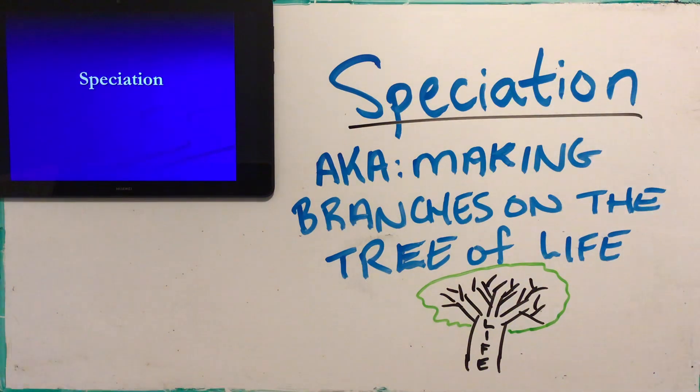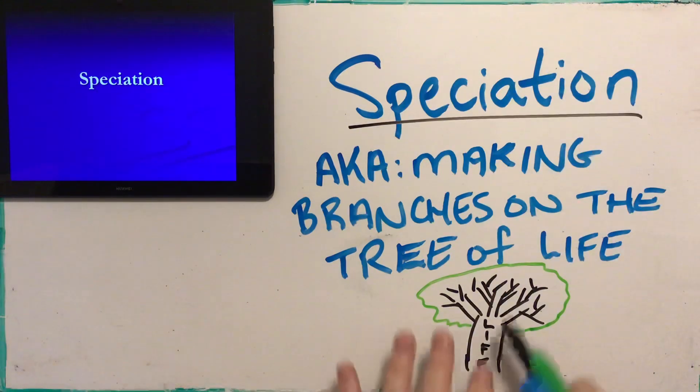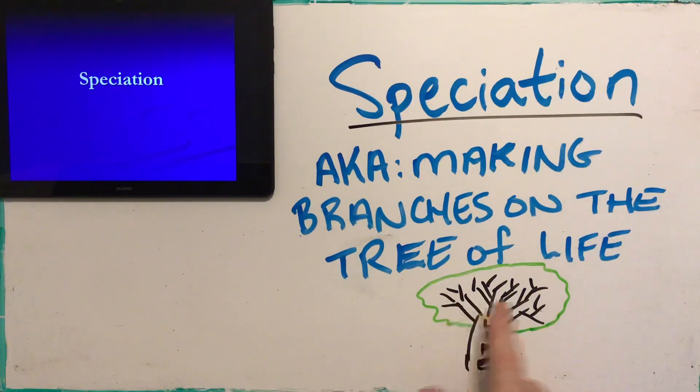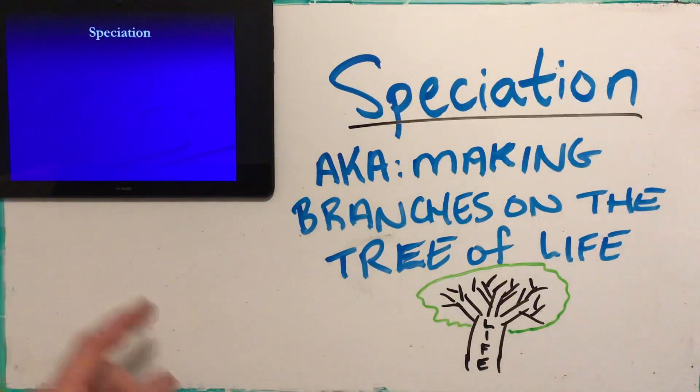Alright, Biology 11 students, our topic today is speciation, which is basically making branches on the tree of life. Darwin referred to all living things stemming from one ancestral species, giving rise to a whole bunch of branches. Today we're going to talk about how those branches are formed. That branching is called speciation — it's the formation of new species due to selective pressures.